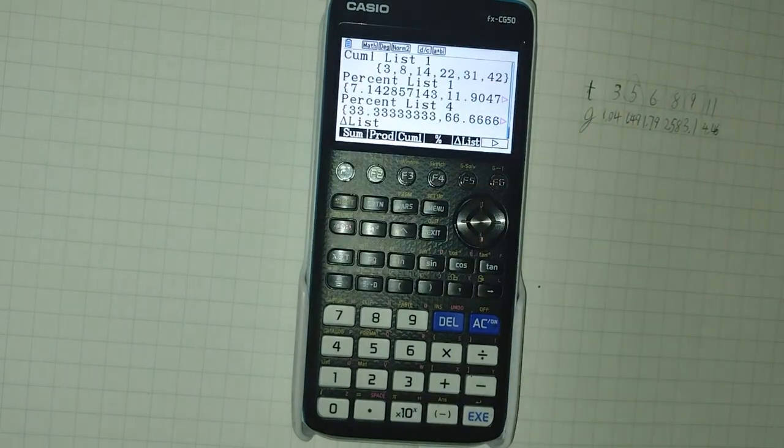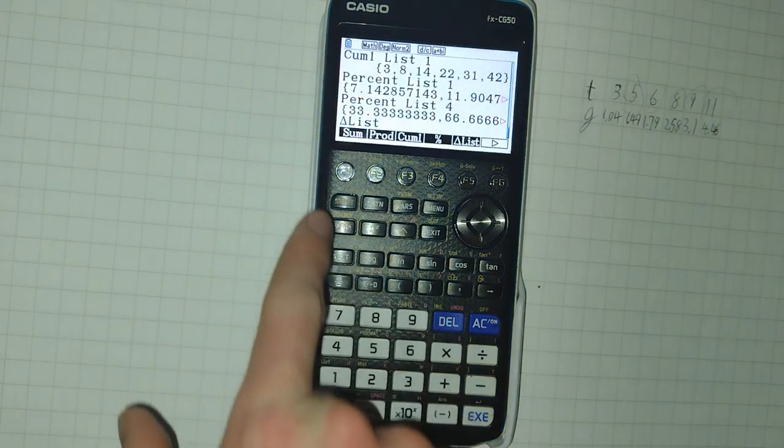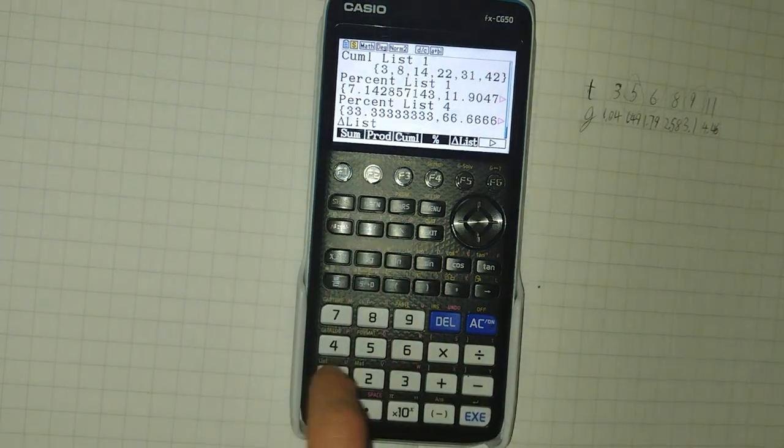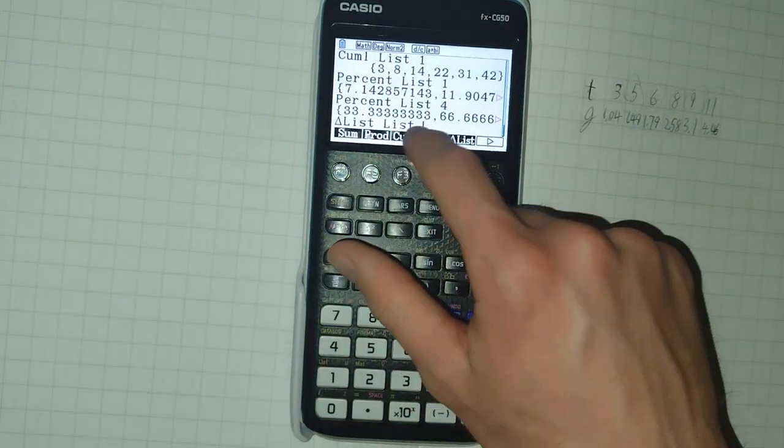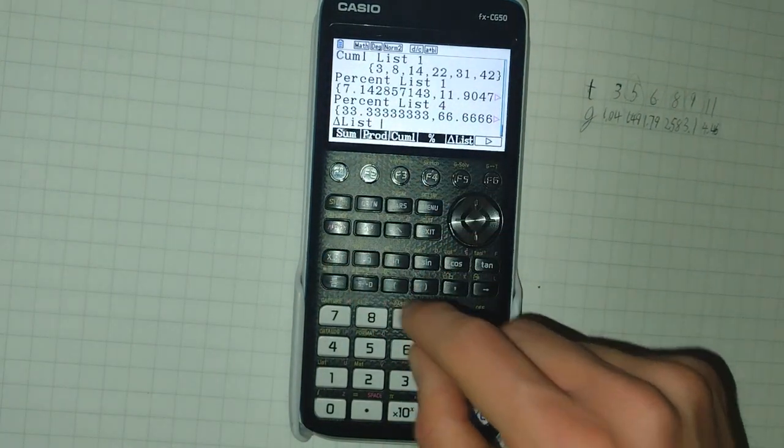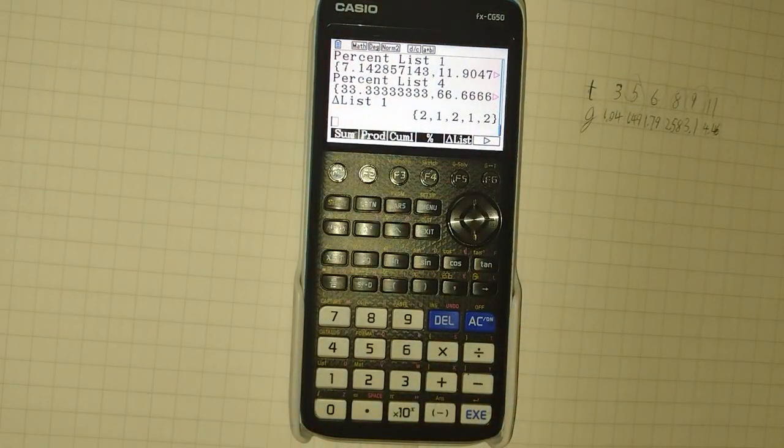We then also have delta list. And this calculates the difference between each item in a list. And here we don't include the shift one list symbol. We, instead, we just leave it as delta list one.